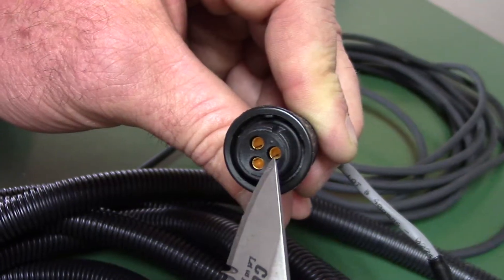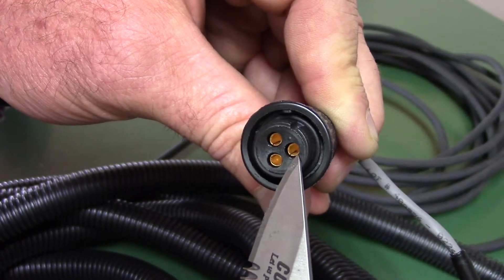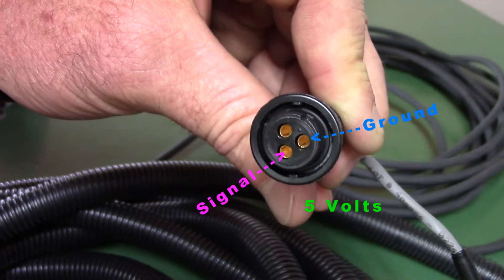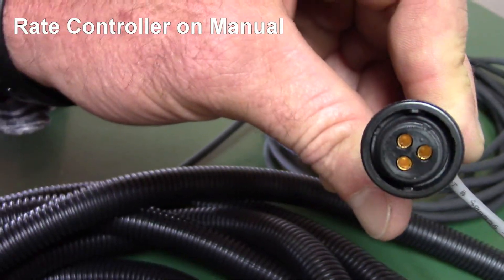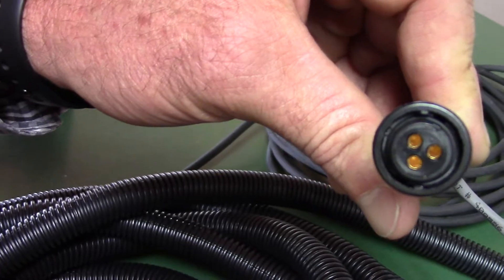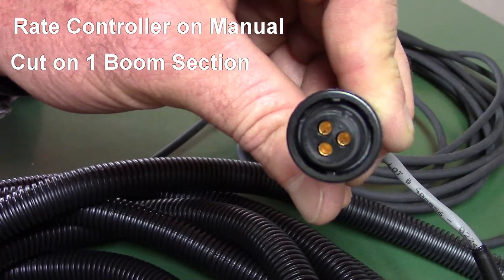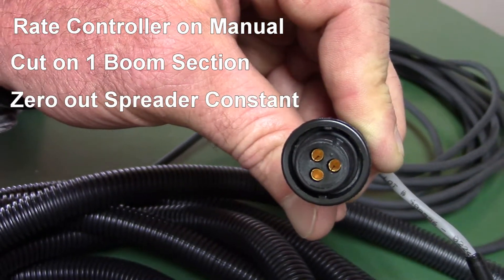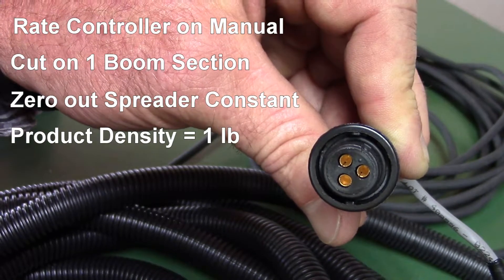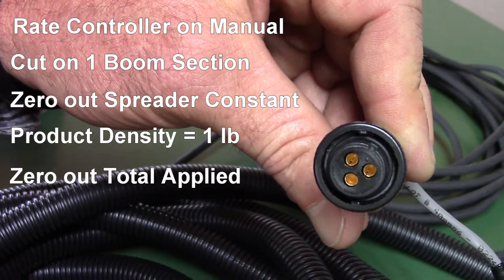A further way to test or the next step in testing is to do a short no short with a small jumper wire between the ground and the signal, and you set your rate controller a specific way to do that. You put your rate controller on manual, you cut on one boom section, you've got to have a boom section on, zero out your spreader cost, put your density in as one pound, and then you also zero out your total applied field.